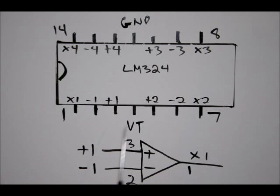So, in the case of this op amp, X1 is pin 1. Output 1 is pin 1. Negative 1, the negative input to your first op amp is pin 2. And plus 1, which is our positive input to our first op amp is pin 3.